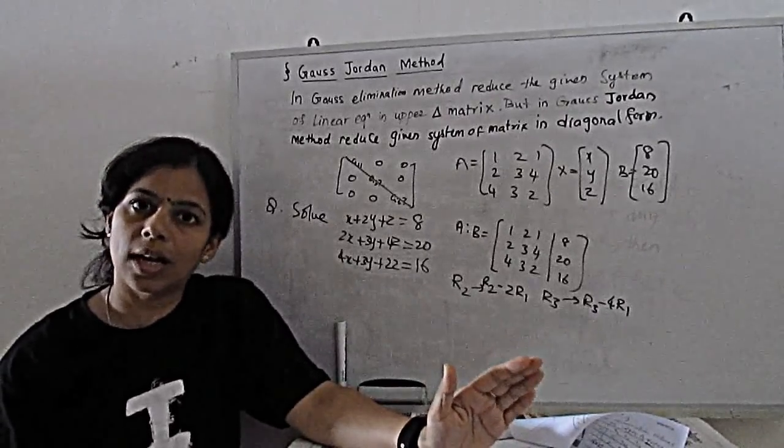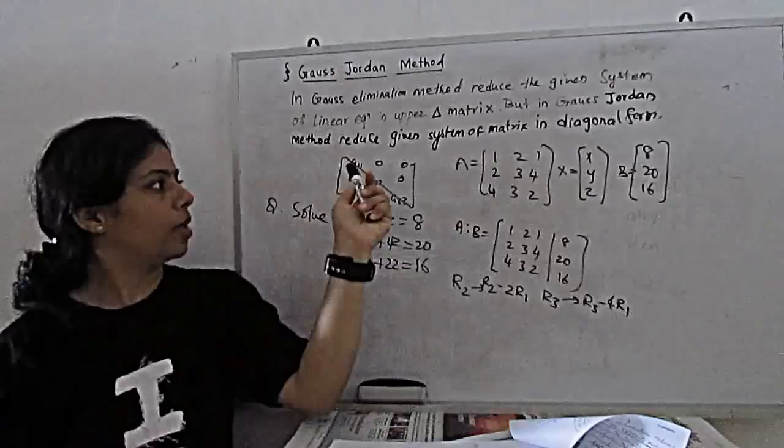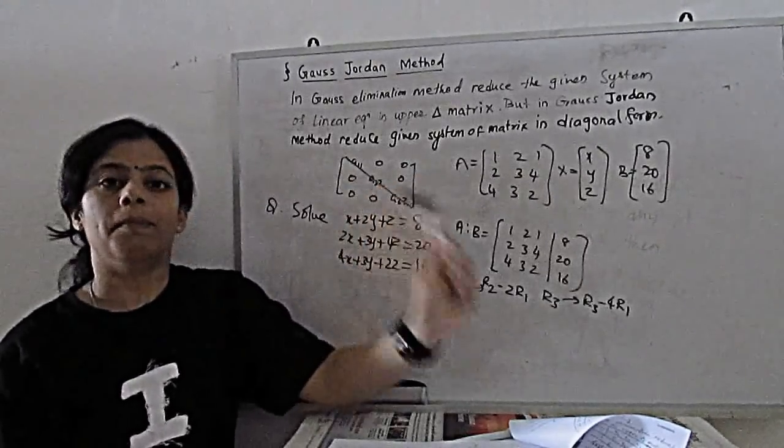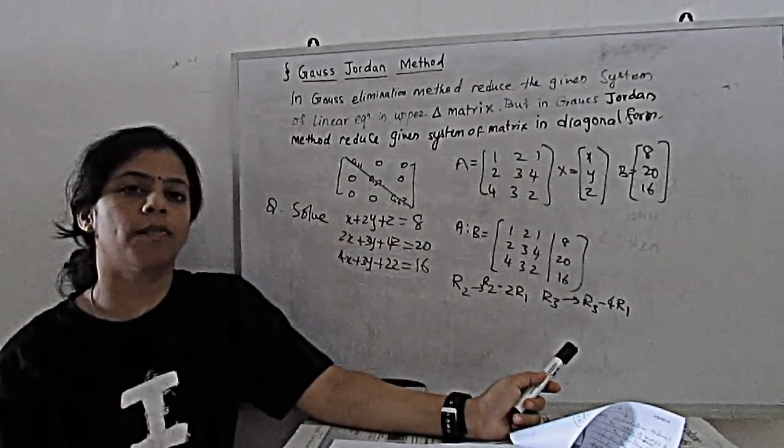Diagonal form means only diagonal have elements and others become 0. We have only A11, A22, A33 have elements. All others become 0. So this is called diagonal form of the matrix.